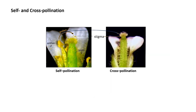Transfer of pollen to the stigma is brought about through the process of pollination. In self-pollinated plant species, pollen from the same flower is transferred to the stigma of the same flower. While in cross-pollinated species, pollen is delivered from the flower on one plant to the stigma of a flower on another plant of the same species. Unlike cross-pollination, which ensures genetic variation and hybrid vigor in the progeny, self-pollination limits genetic variation and may cause inbreeding depression.